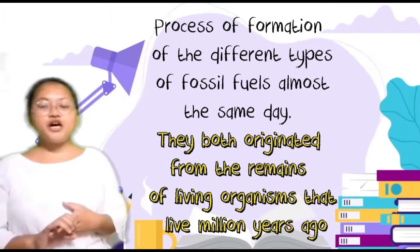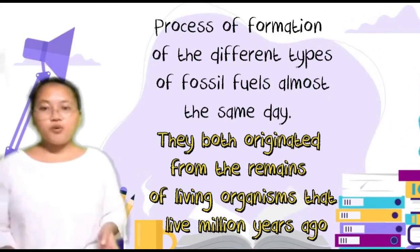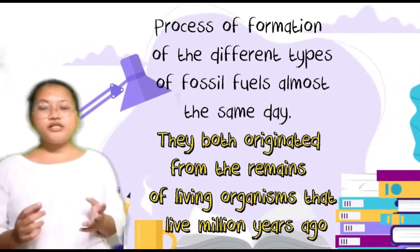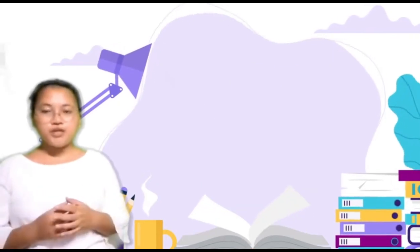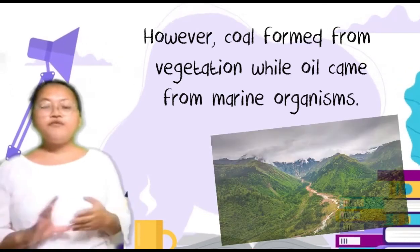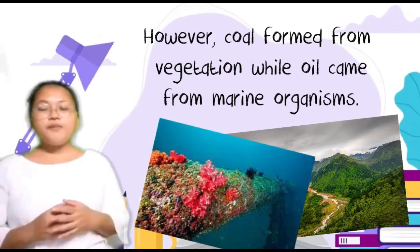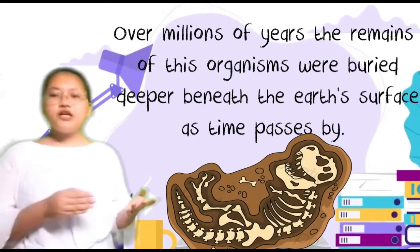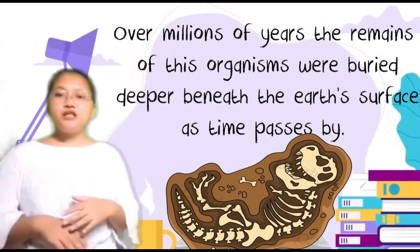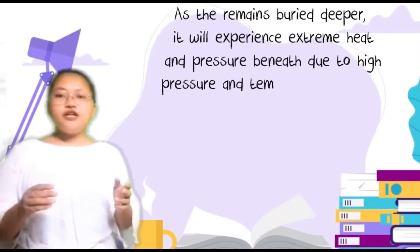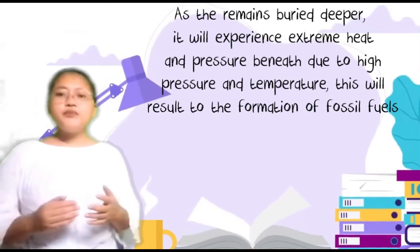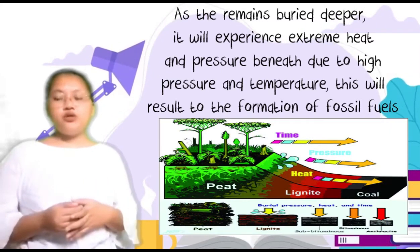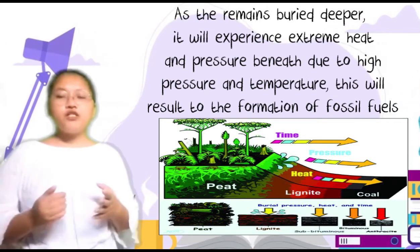The process of formation of the different types of fossil fuels is almost the same. They both originated from the remains of living organisms that lived millions of years ago. However, coal formed from vegetation while oil came from marine organisms. Over millions of years, the remains of these organisms were buried deeper beneath the Earth's surface. As the remains were buried deeper, they experienced extreme heat and pressure, which resulted in the formation of fossil fuels.